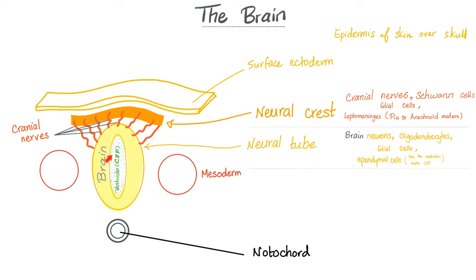Let's talk about the brain. The neural tube is the brain. Therefore, the nerves coming out of the brain are called cranial nerves. The source of the brain is the neural tube; the source of the cranial nerves is the neural crest. The cavity inside the brain? Those are the brain ventricles containing cerebrospinal fluid. The neural tube gives you: the CNS, oligodendrocytes (which myelinate the CNS), glial cells, and ependymal cells (which secrete CSF). The neural crest gives you: cranial nerves, Schwann cells, glial cells, and leptomeninges — pia and arachnoid. The dura mater? That was mesoderm.